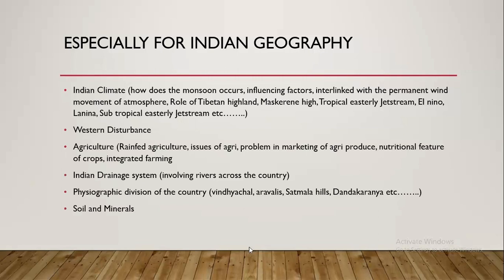Try to focus upon the reasoning part. Western disturbance is also an important aspect of Indian climatology — how it is formed, how it interacts with the Indian atmosphere, and its positive and negative impact on Indian climate and society. Anything happening in the atmosphere eventually impacts agriculture, farmers, nutritional security, and even the export pattern of the country. If climate worsens, agricultural produce is impacted, leading to a current account deficit — so geography is interlinked with economy as well.